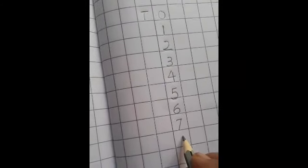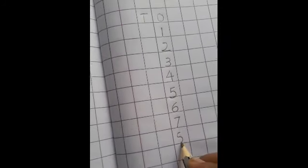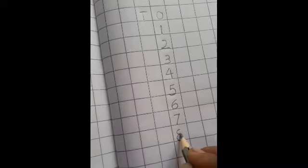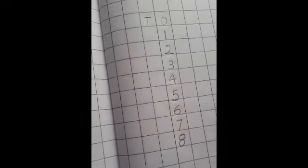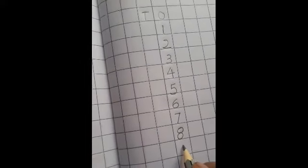Now here, Number 8. How to write Number 8? Look at here. Curve, again join one curve. And again you have to circle it and make one circle. It become Number 8.